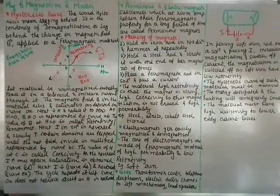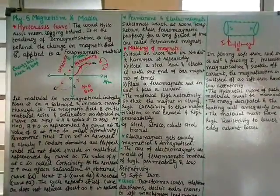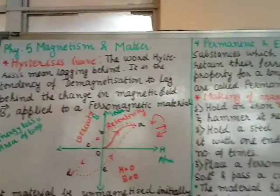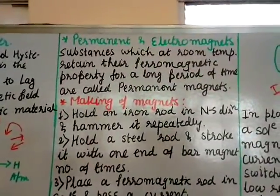Physics class 12, chapter 5, magnetism and matter. In the last class we have done hysteresis curve. Today we shall do permanent magnets and electromagnets.